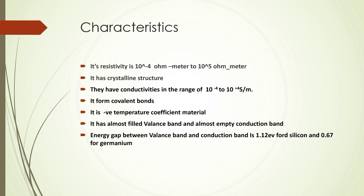Moving to the next characteristic: semiconductors have an almost filled valence band and an almost empty conduction band. The energy gap between the valence band and conduction band is 1.12 electron volts for silicon and 0.67 electron volts for germanium. These are the characteristics of semiconductors. If any material obeys all these, that material is called a semiconductor.